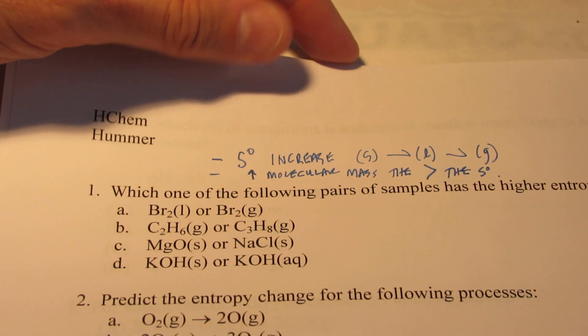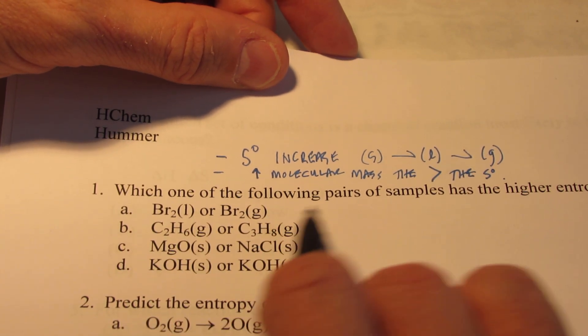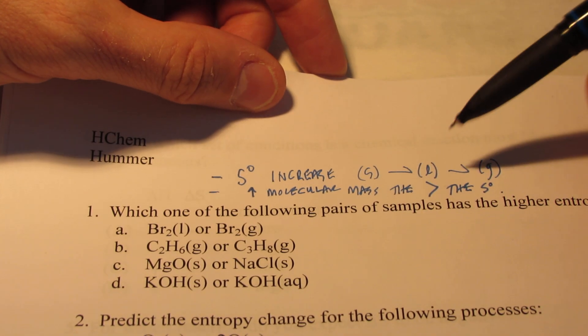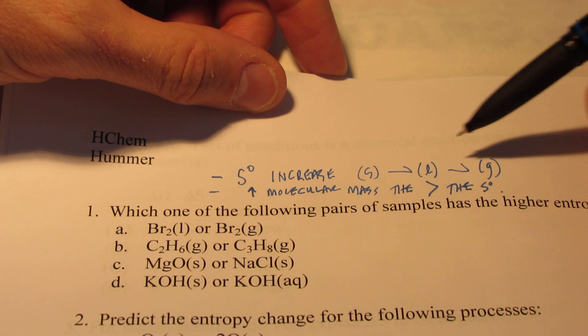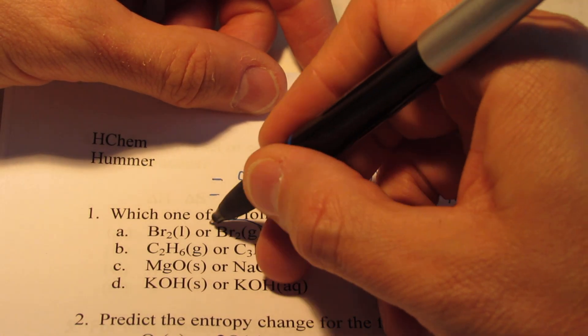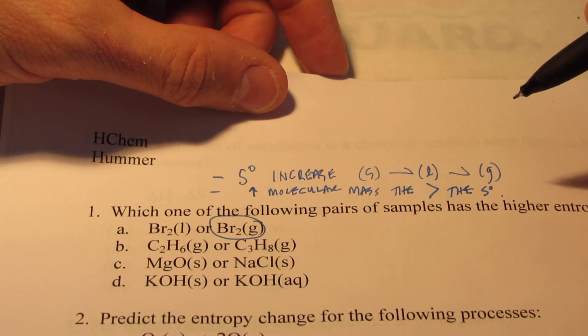Now, let's take a look at these examples here for number one. Which of the following pairs of samples has the higher entropy? Bromine liquid or bromine gas? Well, let's see. Gases have a higher degree of entropy than do liquids. Their degree of disorder increases. So bromine gas would be the one I would circle for 1A. How about 1B?